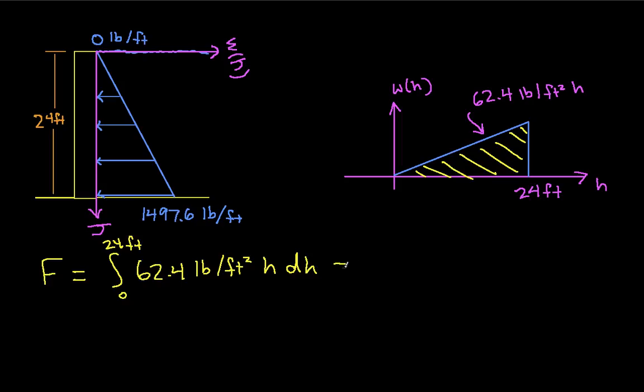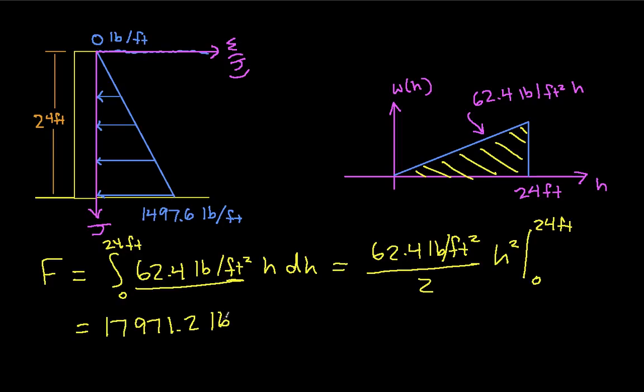If I work this out, then I get 62.4 pounds per foot squared divided by 2, because this guy out here is just a constant with respect to h. Then I would have h squared evaluated at an upper limit of 24 feet and a lower limit of 0. When I work this out, I get 17,971.2 pounds, which miraculously is the same value as we had when we just looked at the area of the triangle.